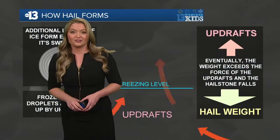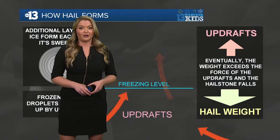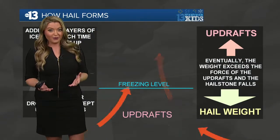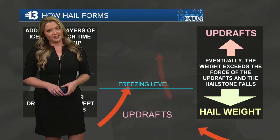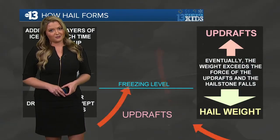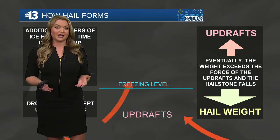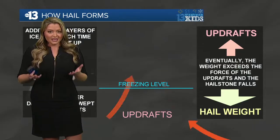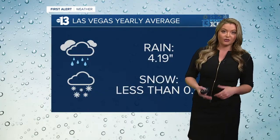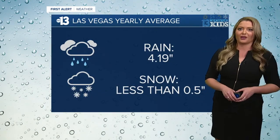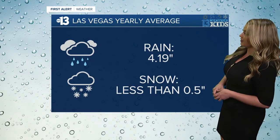When a thunderstorm is strong enough, a hailstone can get as large as a softball or a grapefruit before falling to the ground. But here in Las Vegas, we usually only see hailstones smaller than about a dime. We live in one of the driest climates in the entire country and only accumulate just over four inches of rainfall per year.